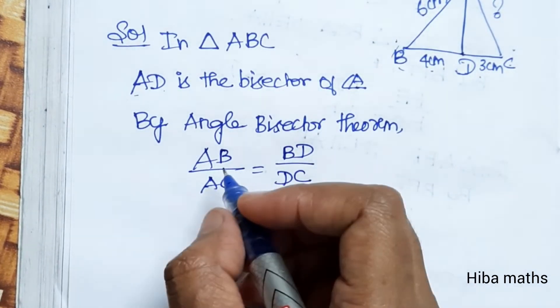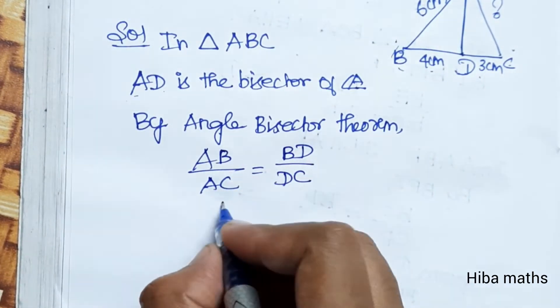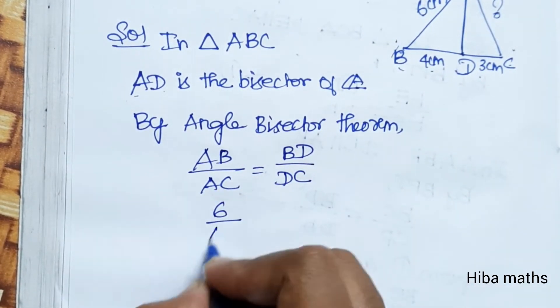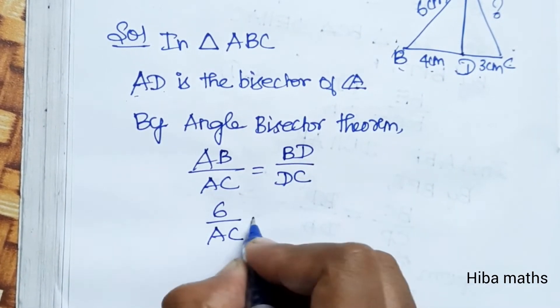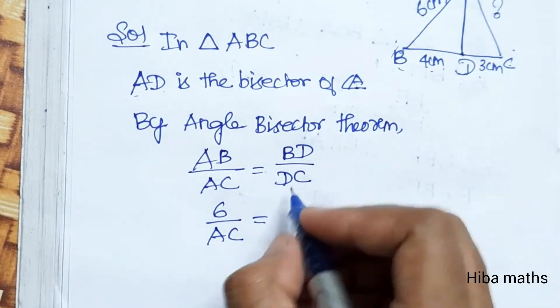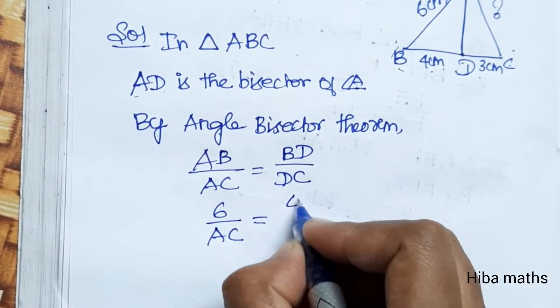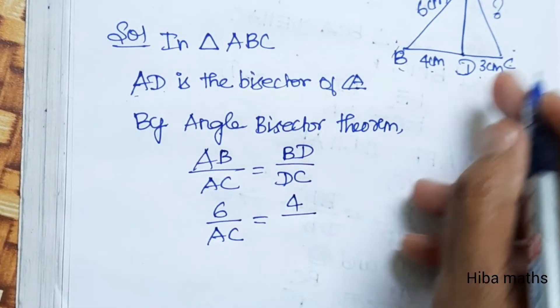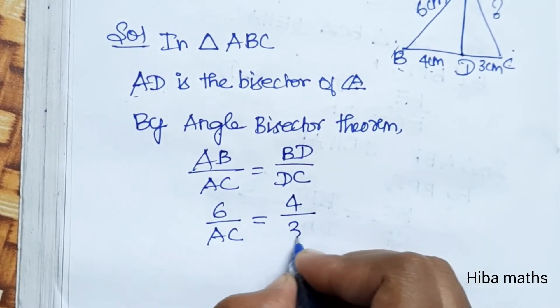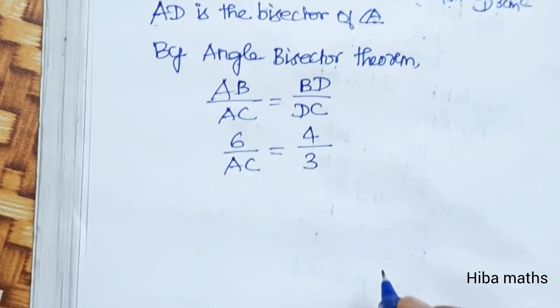Substituting the values: AB is 6, BD is 4, and DC is 3. So we have 6 by AC equals 4 by 3.